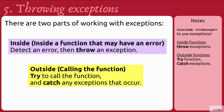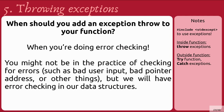There are two parts of working with exceptions. The inside — where we're inside of a function that may have an error, and when we detect an error, we throw an exception out of the function. And then there's the outside, the place that is calling that function — we try to call the function and then catch any exceptions that occur. When should you add an exception throw to your function? When you're doing your error checking. You might not be in the practice of checking for errors such as bad user input, bad pointer addresses, or other things, but we will have error checking in our data structures.